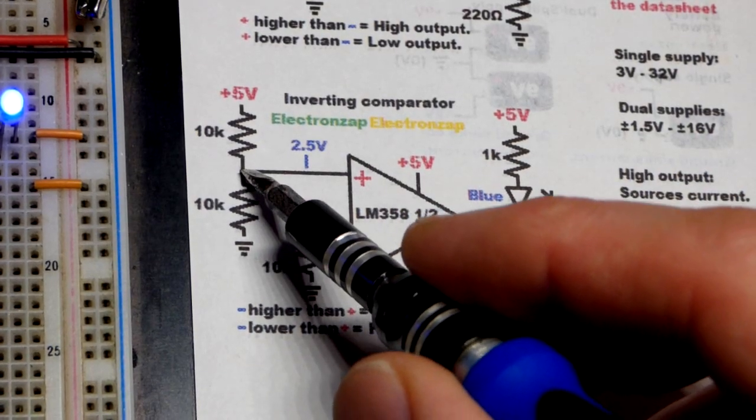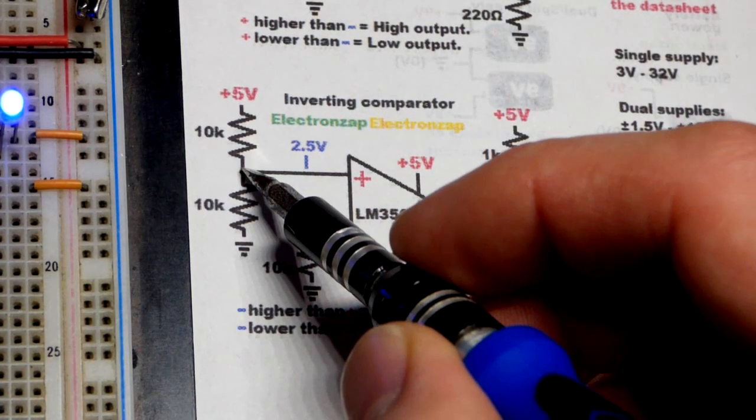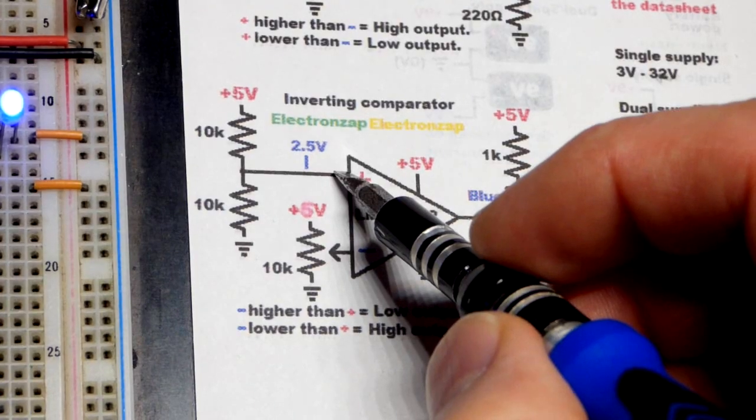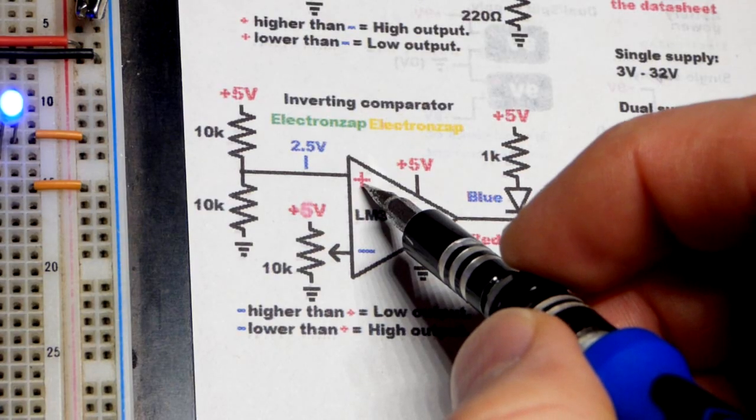We have a fixed voltage right here, so we refer to that as the reference voltage. Unless we change the supply voltage, this voltage is going to be held steady.